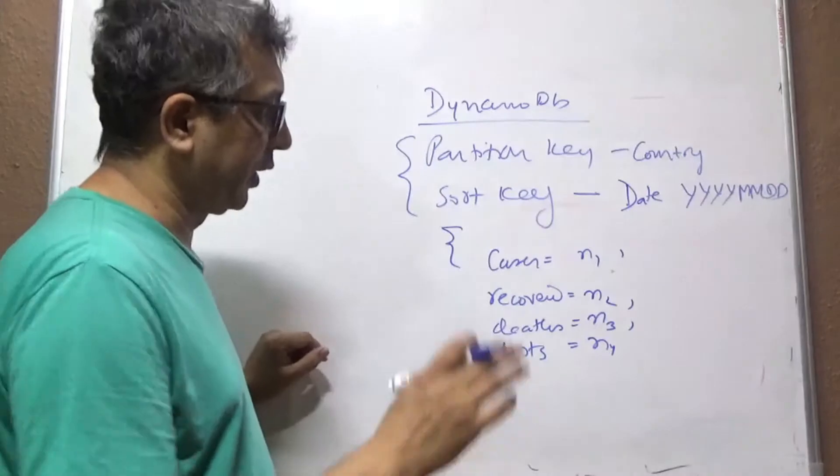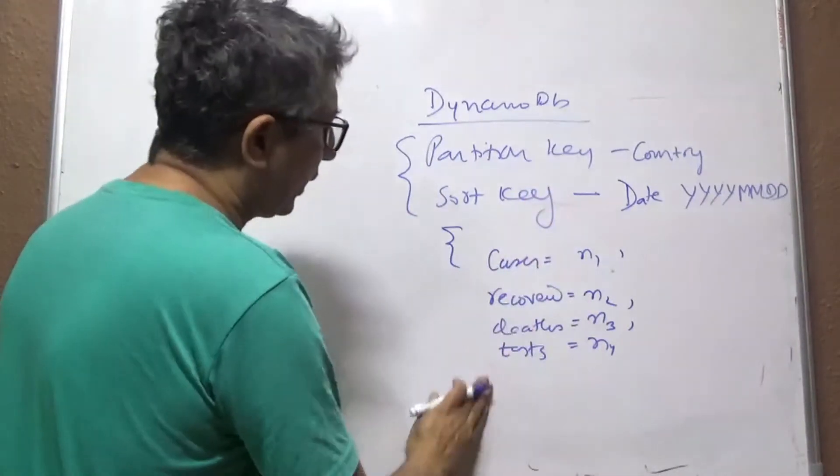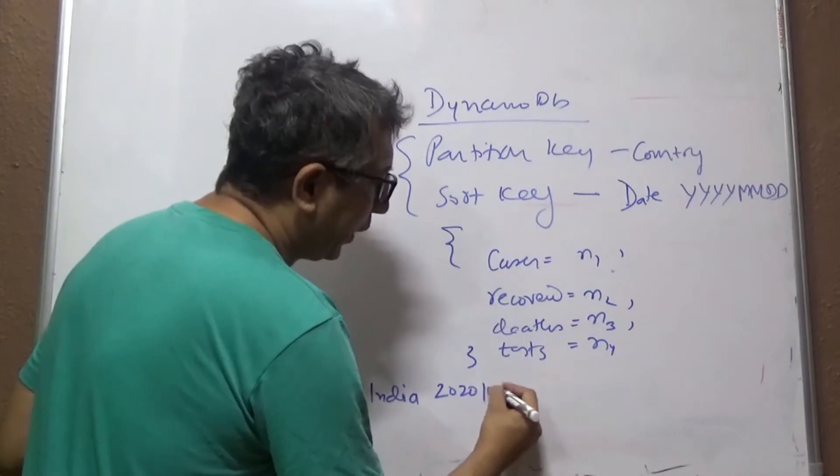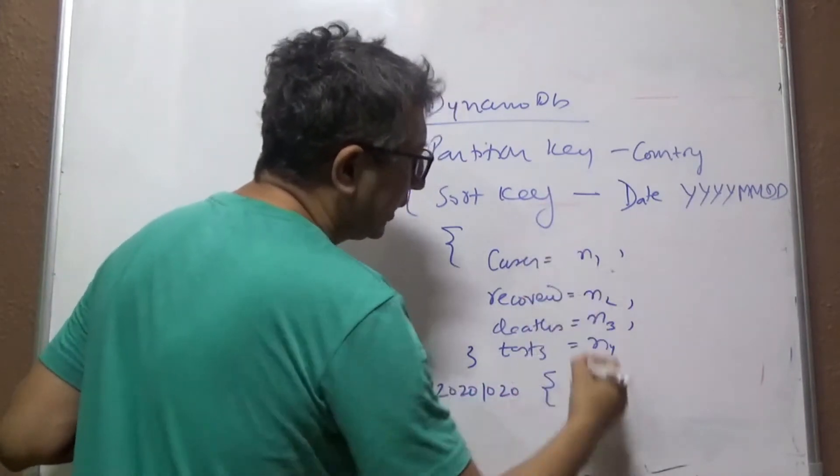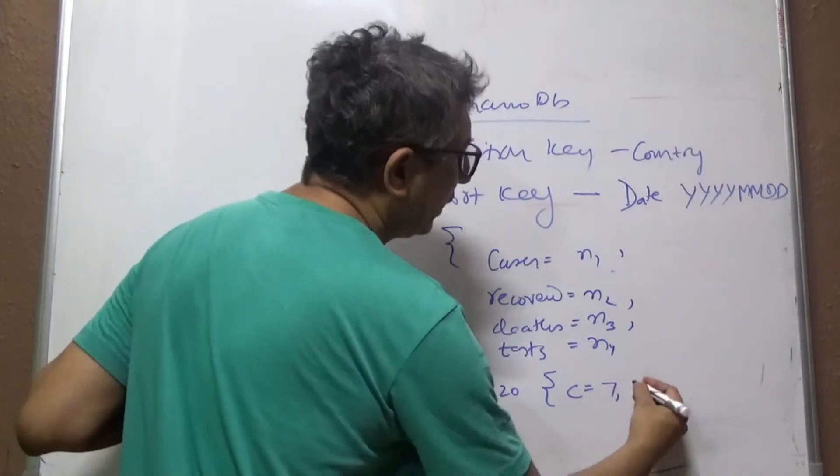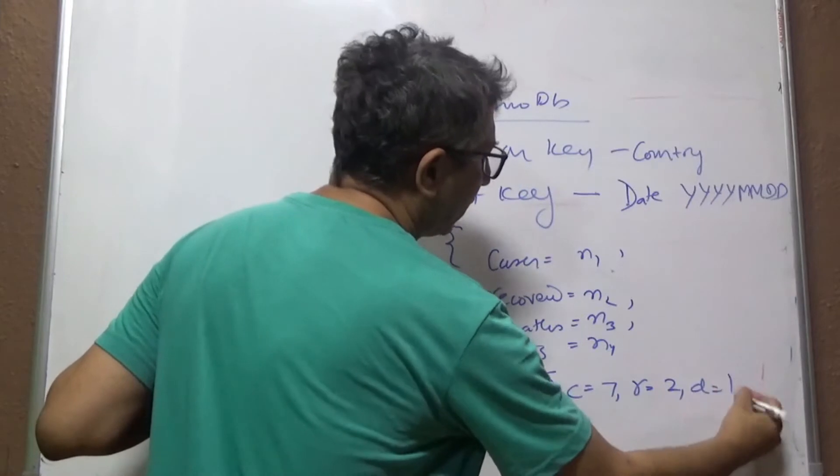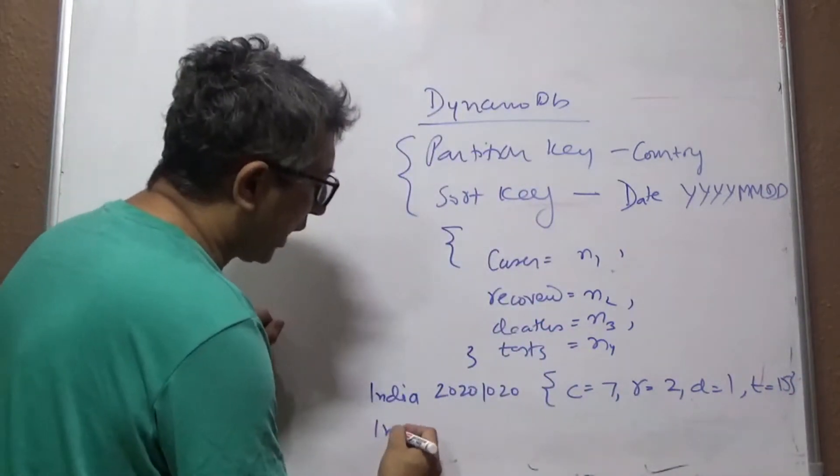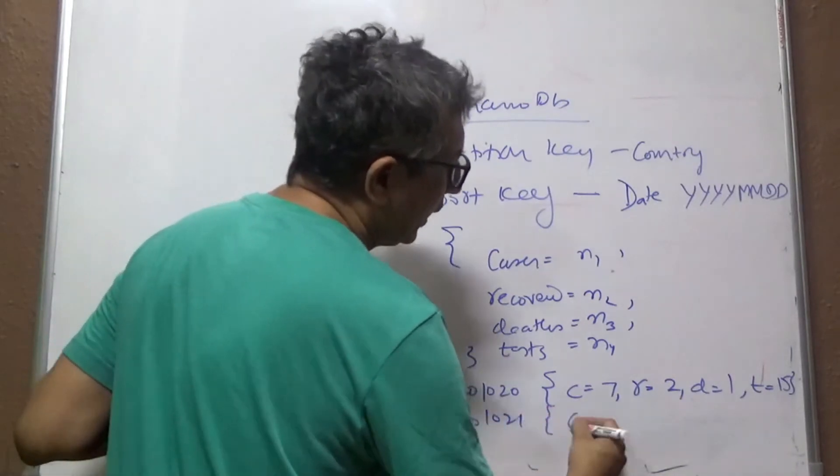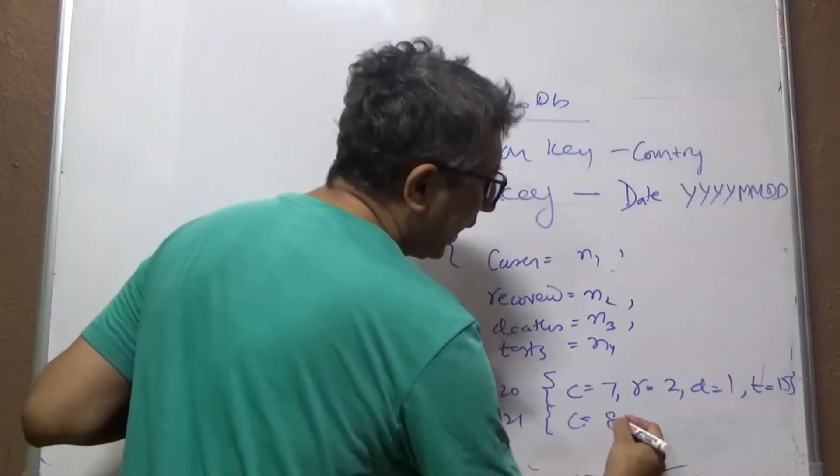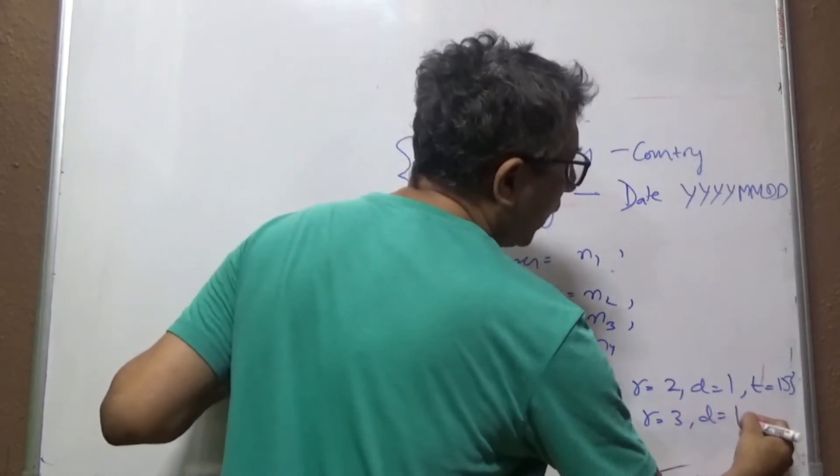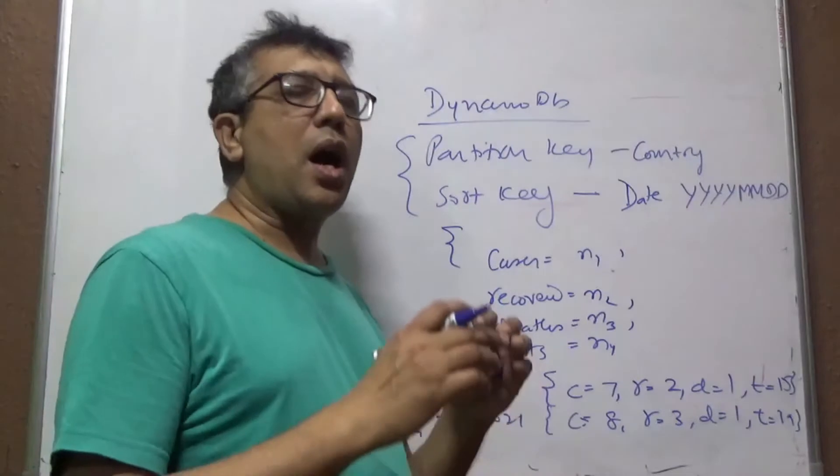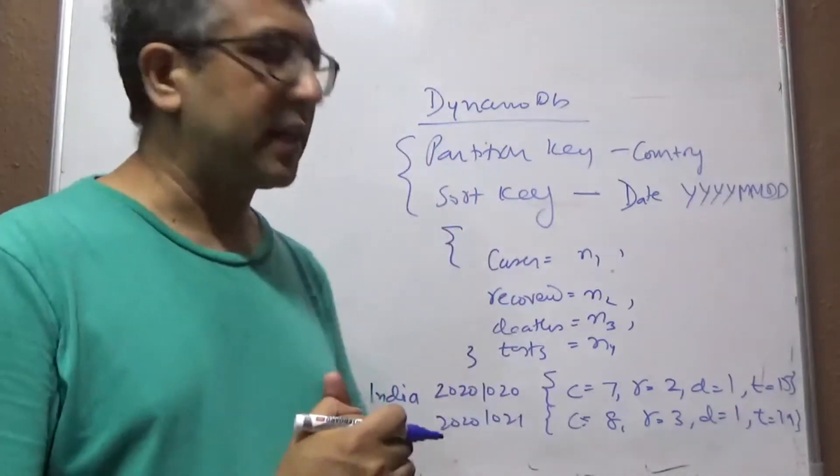So let's say for an example, for India you put data for let's say 20th October: C=7, R=2, D=1, and T=50. And then you put another record next day 20201021: C=8, R=3, D=1, and T=90. Just for an example. Now how does the query and the scan make a difference?